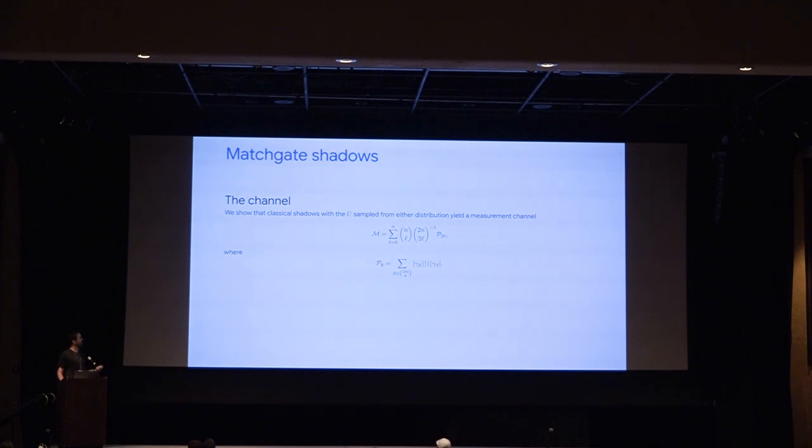Now that we have this ensemble, and I said what a classical shadows protocol looks like, the next thing we need is to be able to write down what the measurement channel is actually doing, and hopefully to invert it, and that is one of the things that we did in the paper.